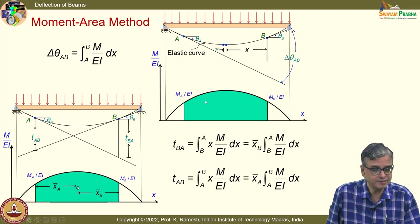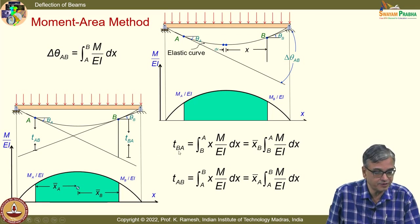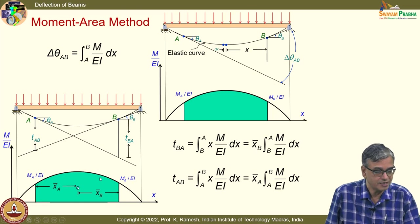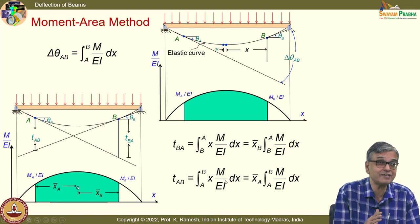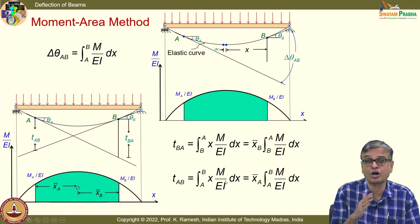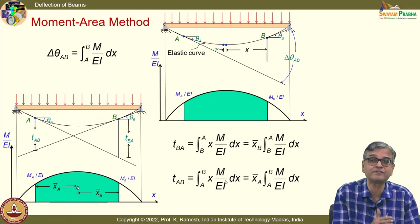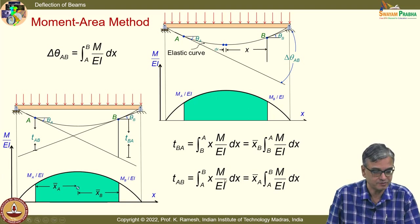Similarly, you get only tangential deviation when you take the moment. If you take T_BA, you multiply by x̄_B; if you take T_AB, you multiply by x̄_A. You should know how to use this effectively to get the actual deflection or actual slope.